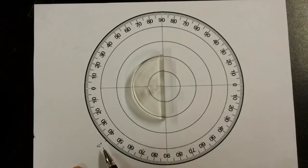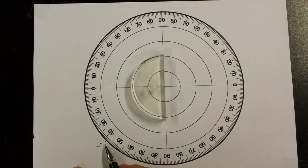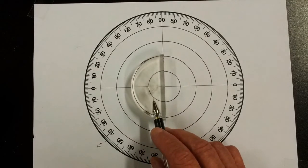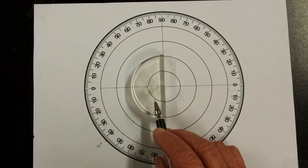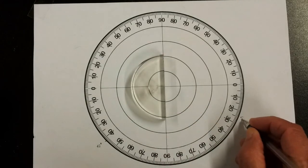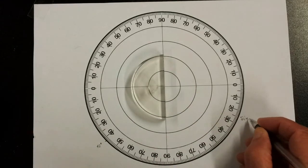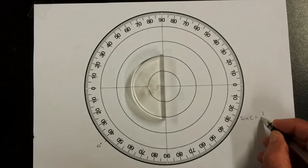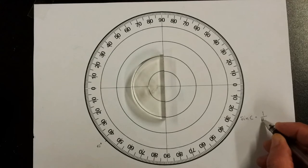That is the critical angle, 42 degrees. Now that critical angle can be used to find the refractive index of our perspex. The sine of the critical angle is 1 over the refractive index, so sine C, the critical angle, is equal to 1 over the refractive index.